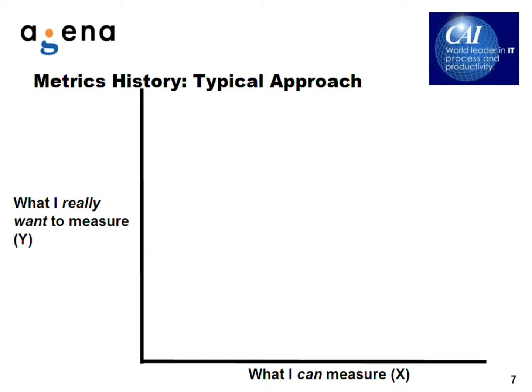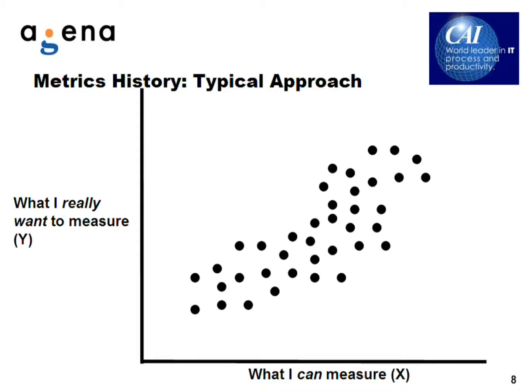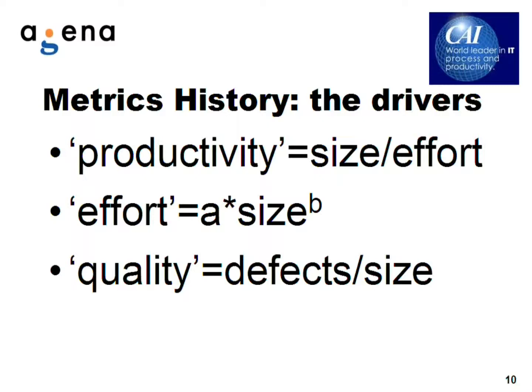Using past project data, we plot the two measures X and Y, where each dot represents a project. Then we apply statistical regression methods, which is all about finding the line that best fits. This line is defined by a function F, and we can use it to make predictions of Y in future projects once we've measured X. The defining method of software metrics is conceptually simple, and it turns out that just about every single technical development in the history of software metrics was driven by two types of Y values: something like resource, or something like quality.